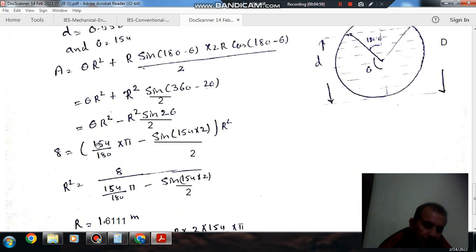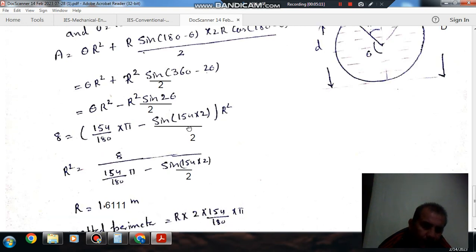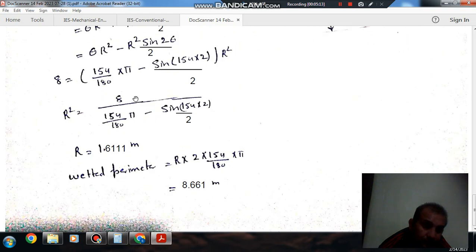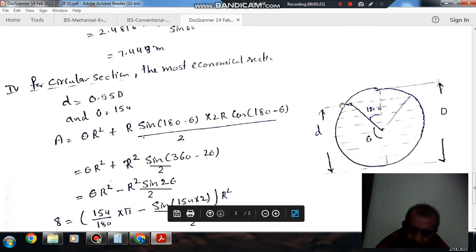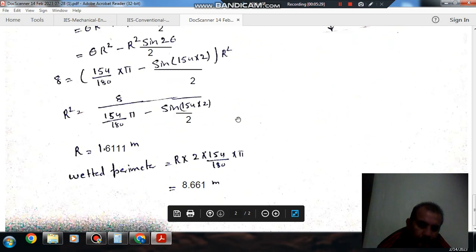We can put theta in radians, theta is 154 degrees, so in radians it's 154π/180. We can use R² as common and total area is 8, we can find out R. R is 1.611 m and the wetted perimeter is 8.661 m.